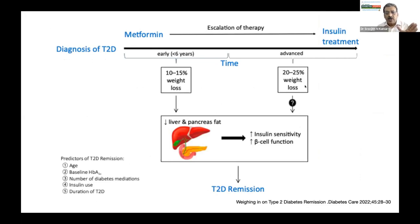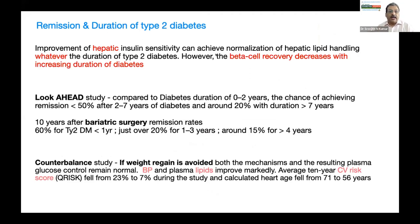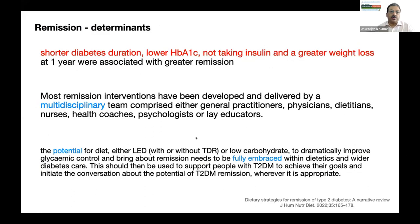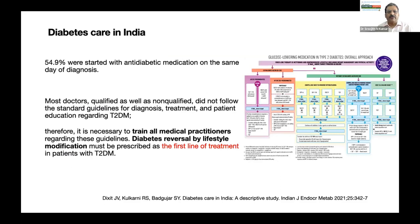Remission is possible at any BMI, but with increasing duration you need to reduce more fat. With increased duration, hepatic insulin sensitivity still improves, but beta cell recovery decreases. Not just blood sugar — blood pressure, lipids, and cardiovascular risk all come down when fat is reduced. The determinants of remission are: shorter diabetes duration, lower HbA1c to begin with, not taking insulin, and greater weight loss at one year. A multidisciplinary team is usually needed, and lifestyle measures to reverse diabetes should be fully embraced given the evidence we now have.